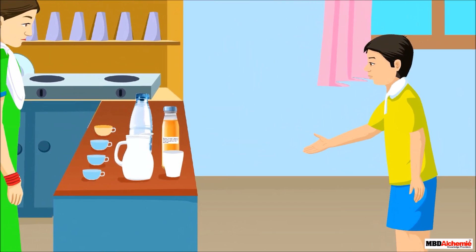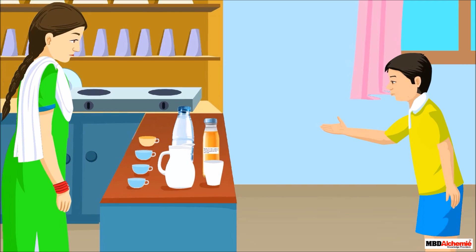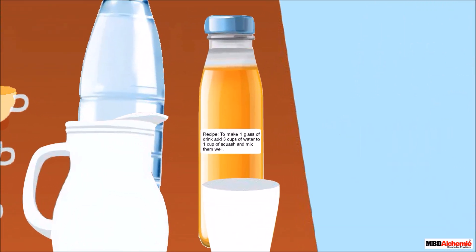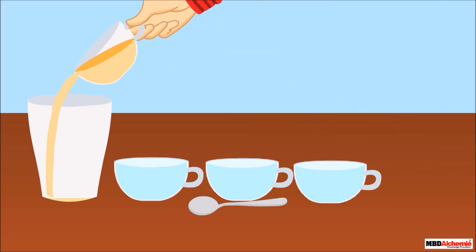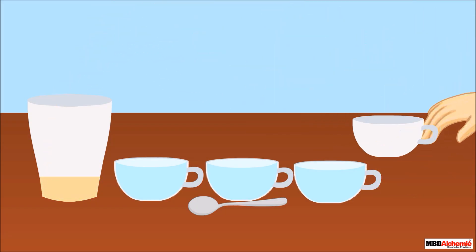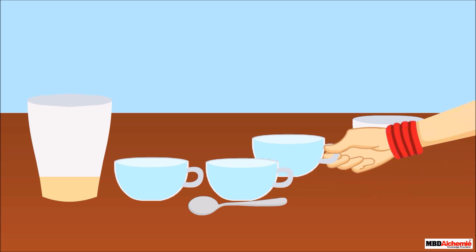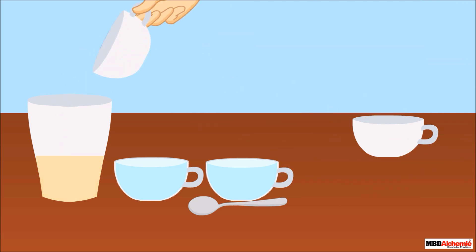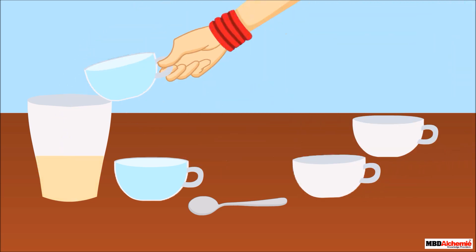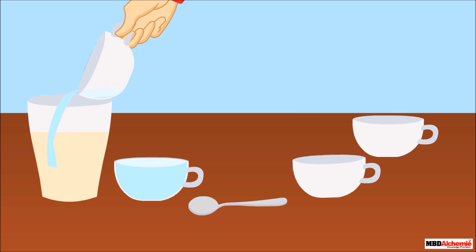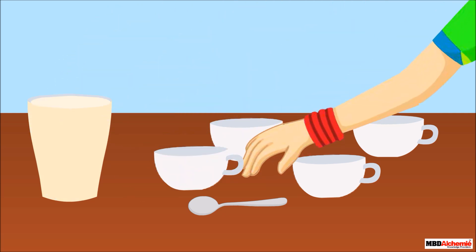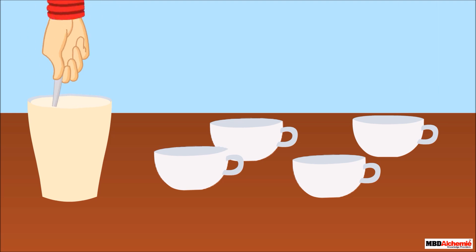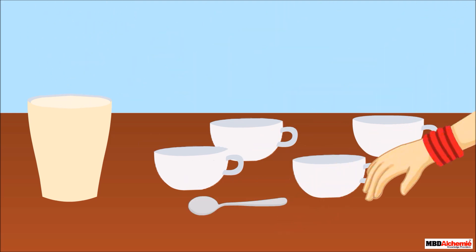Mom, how did you know what to add and how much? It is written on the bottle: to make a glass of drink, take one cup of orange squash, pour it into a glass, add three cups of water to it, and then mix them well. Your drink will be ready to serve.